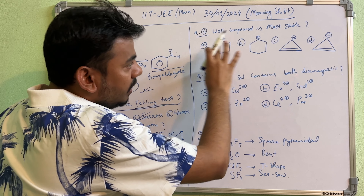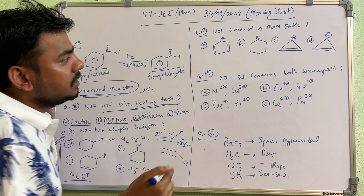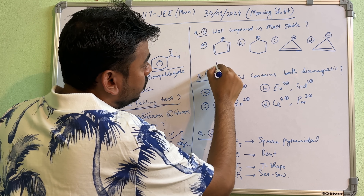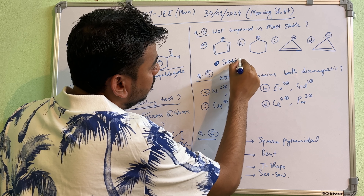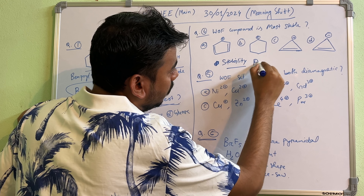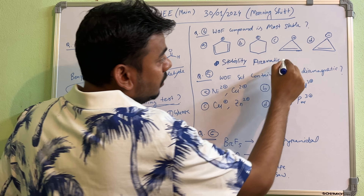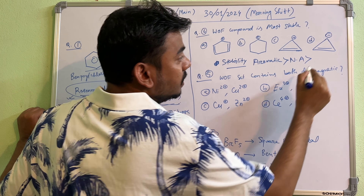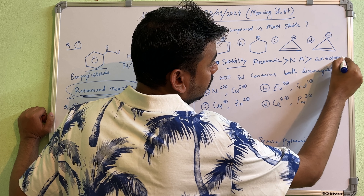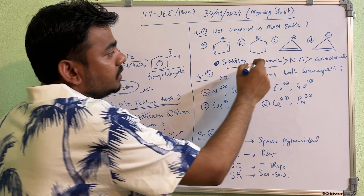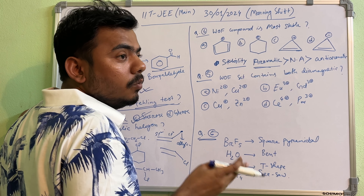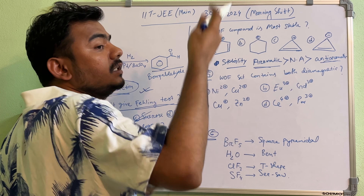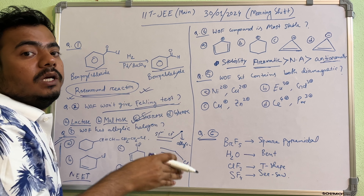Question four asks which compound is most stable. To find stability you need the concept of aromaticity. Remember: aromatic compound is most stable, then non-aromatic, and least stable is anti-aromatic. After resonance, aromatic compounds lose energy and become more stable, whereas anti-aromatic compounds gain energy after resonance and become least stable.